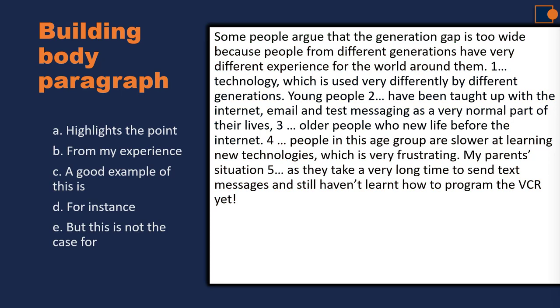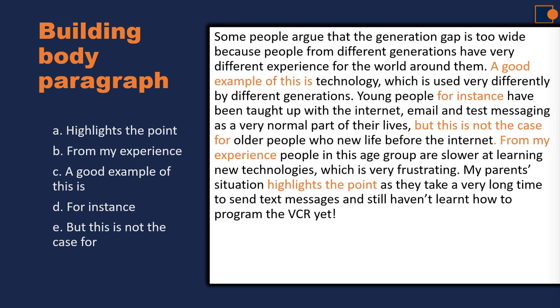Now let's test your knowledge. There are gaps numbered one to five — try to match the linking words on the left to the correct positions. The first position is the beginning, giving the main point. The second sentence provides the reason. The third introduces an example — for this we use 'for instance' or 'a good example of this,' such as: 'A good example is technology which is used very differently by different generations.'